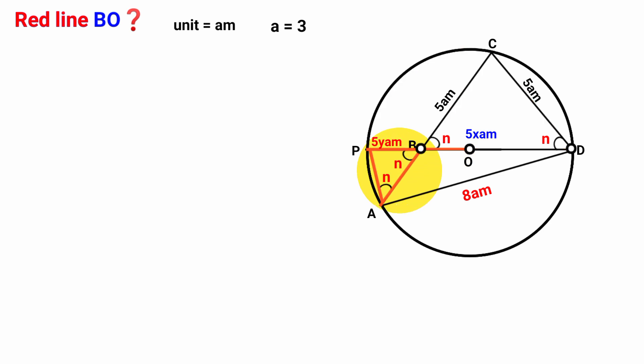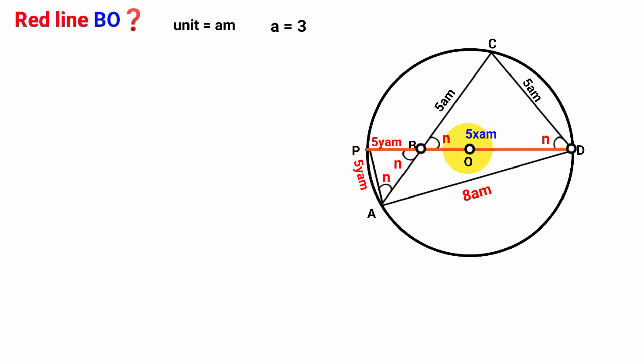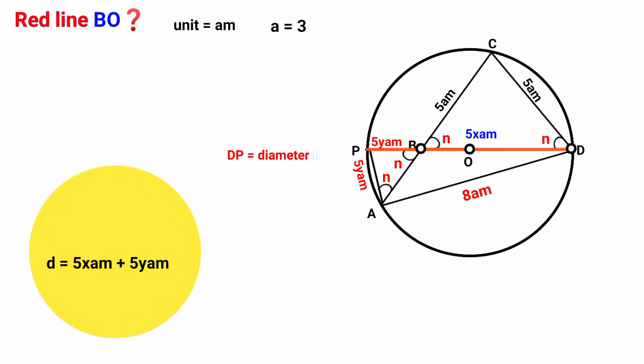Now look at this triangle. We have two of its angles to be congruent — that is, it is an isosceles triangle. The sides facing the congruent angles are equal. So since this side is 5YA meters in length, this must also be 5YA meters. Now look at this line DP — it passes through point O, which is the center of the circle. That is, it is a diameter. The length of the diameter is the sum of this 5XA meters and this 5YA meters. So D equals 5XA meters plus 5YA meters.